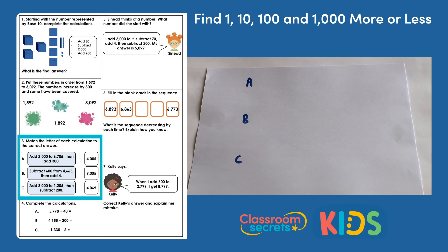Question 3. Match the calculation to the correct answer. We have three calculation statements — A, B and C — and three numbers on the right-hand side. We have to match each of the statements to the number on the right that is the result of following the instructions in those calculation statements.